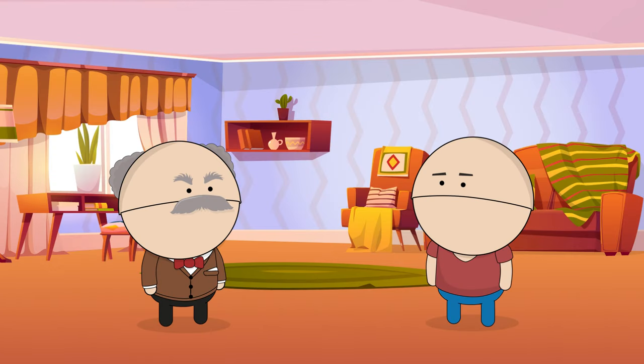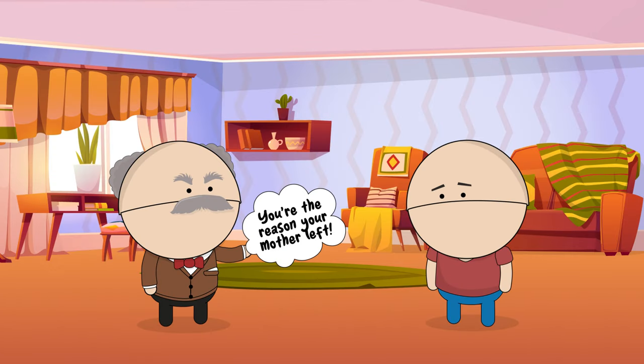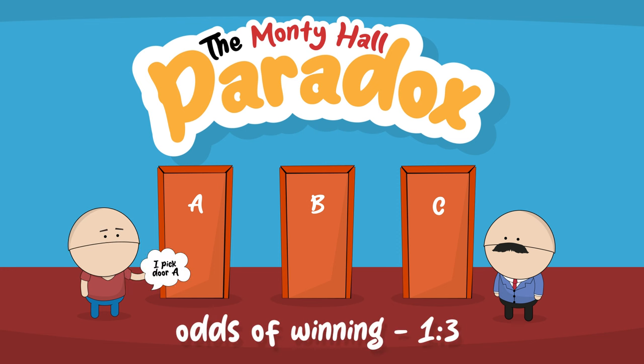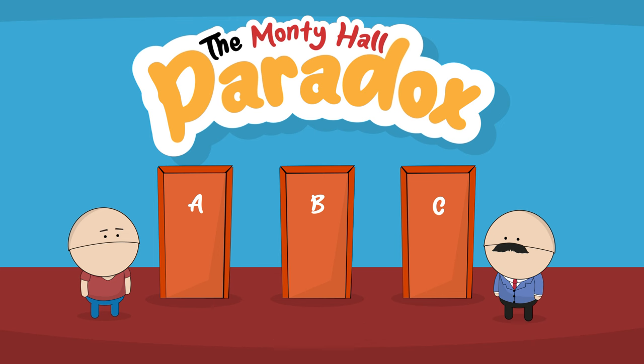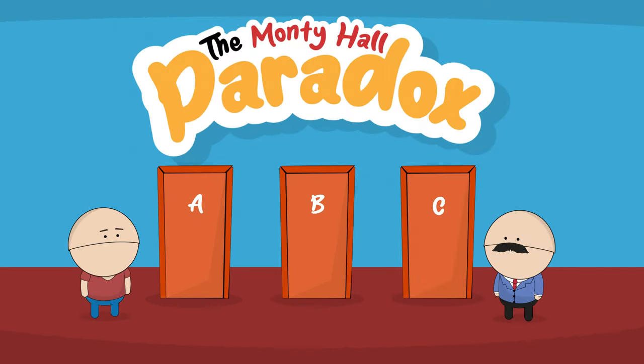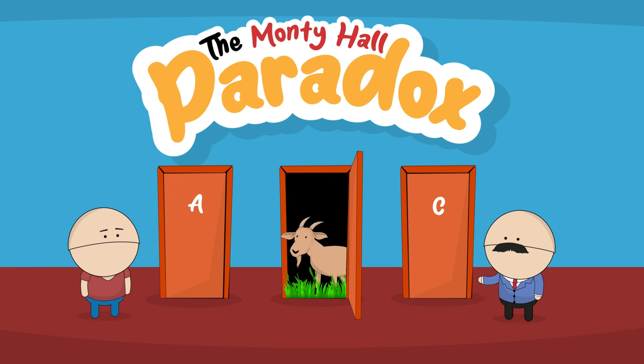Wrong. And thinking like that is part of the reason why your father doesn't respect you. When you made your initial choice, you were correct in thinking you had a 1 in 3 chance of winning, but the key to understanding the Monty Hall paradox is remembering that Monty knows what's behind each door. And he is never going to open the door with the money behind it. He will always show you one of the goats.